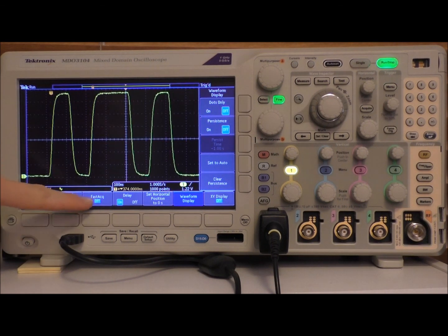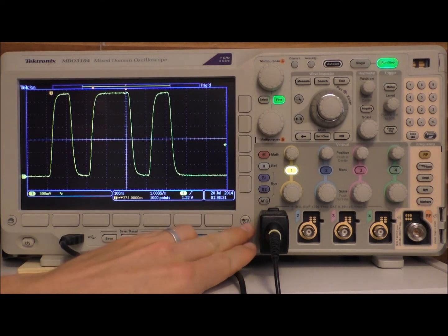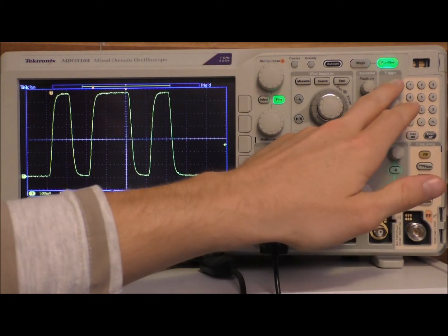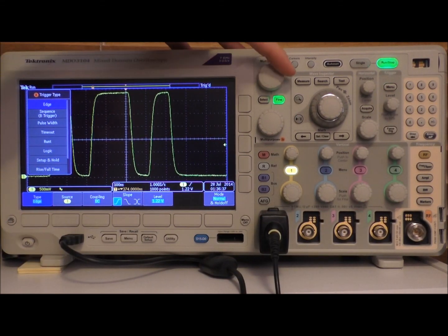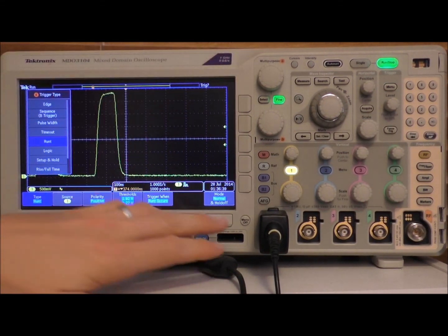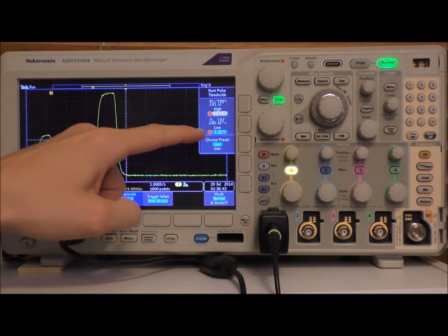Now that I've got fast acquisition off and persistence off, let's try and find that signal that's been giving us the trouble. So we're going to go trigger menu. And instead of triggering on an edge, we're going to trigger on something called a runt. And we can set here the high threshold and the low threshold.